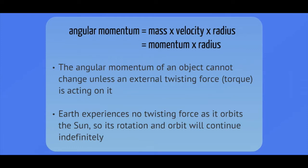Angular momentum is defined as the mass times the velocity times the distance or the radius of the orbit. Or we could say it's also the momentum times the radius of the orbit. So the angular momentum, just like the linear momentum, cannot change unless there's some type of external force acting on it. In this case, that force has to be a twisting force to either speed it up or slow its rotation down. And we call that type of twisting force a torque.